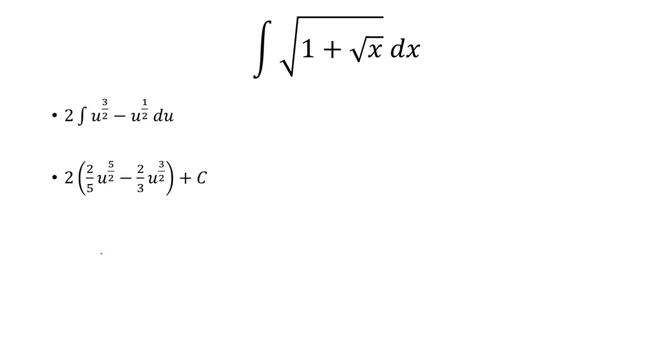Now I can find the anti-derivative of each one of these. We'll have 2 fifths u to the 5 halves minus 2 thirds u to the 3 halves.